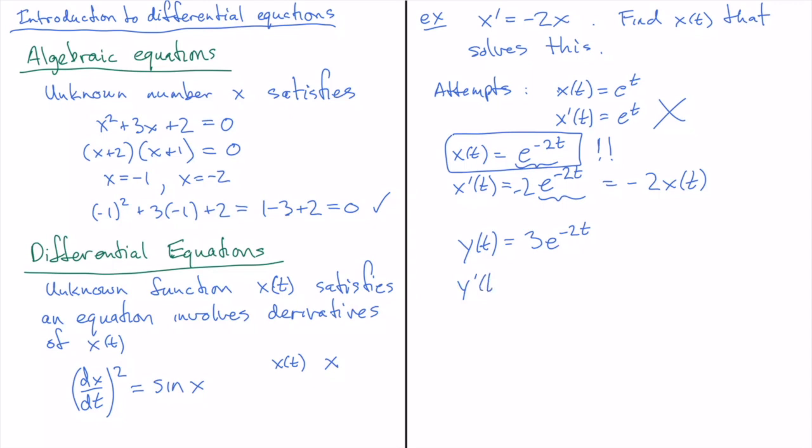And when you take the derivative of this guy, because the 3 is largely unaffected by the derivative, it just hangs around in front, and then I still have a minus 2 by the chain rule times e to the minus 2t. Now you can see that I have a 3e to the minus 2t, that's my y of t, and in the derivative, I have a 3 and an e to the minus 2t. So this is, again, minus 2 times the original guess. And in fact, any number...